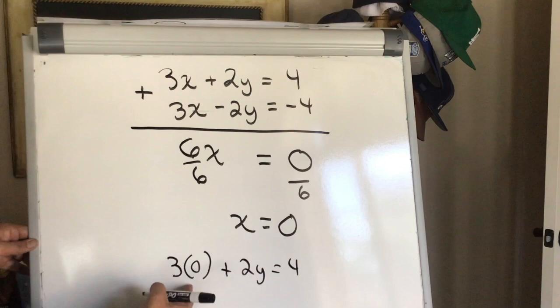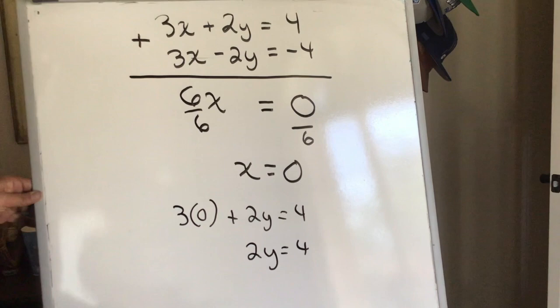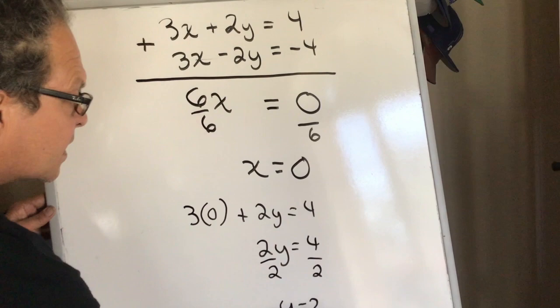3 times 0 is 0, so 2 times y is 4. To solve, divide both sides by 2, and my y value is 2. So my ordered pair, x is 0, y is 2.